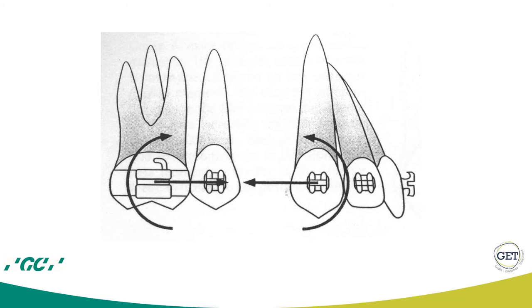Whenever you talk about space closure, remember that we apply forces at the level of the crown. So when you apply forces as shown in this diagram to close a space, the two segments at the level of the center of resistance would have a force plus a moment — directed clockwise for the anterior segment and counterclockwise for the posterior segment. If you want translation, you need to apply two moments counteracting these, otherwise you will get tipping.